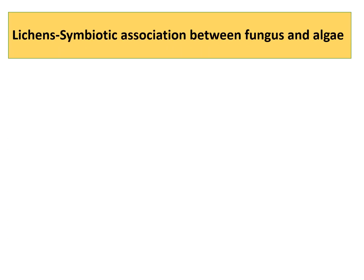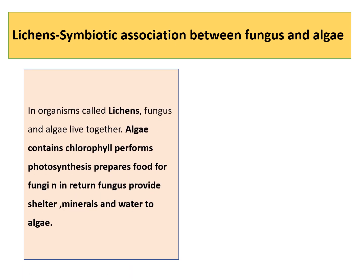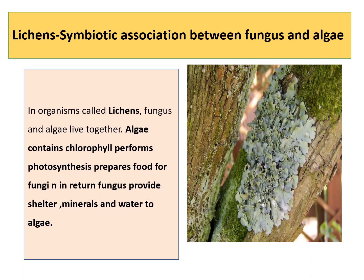Another symbiotic association is lichens — the association between fungi and algae. In this relationship, the algae contain chlorophyll, perform photosynthesis, and prepare food for the fungi. In return, the fungus provides shelter, water, and minerals to the algae. This is the symbiotic association between various organisms that provide shelter and food to each other and help each other in surviving.